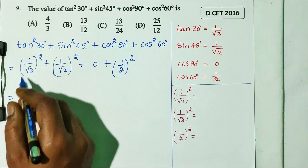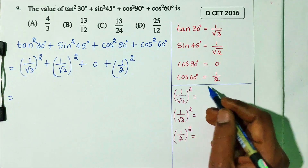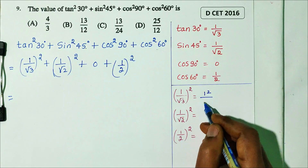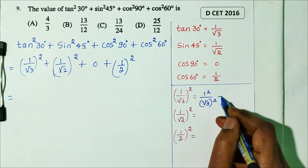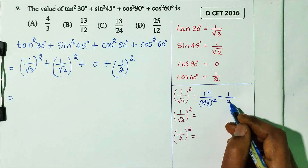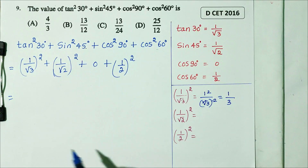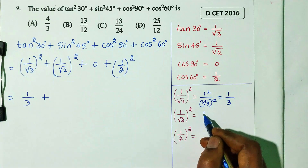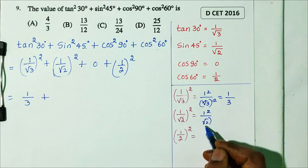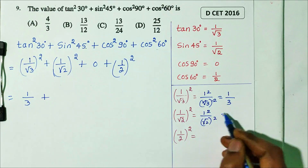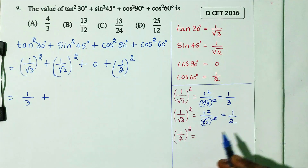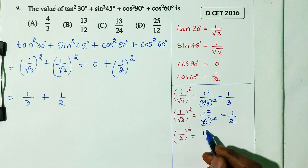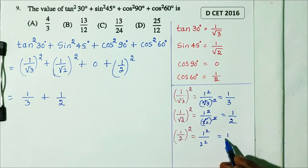Next step: (1/√3)² equals 1/3, because square and square root cancel. (1/√2)² equals 1/2. 0 squared equals 0. (1/2)² equals 1/4. So the expression is 1/3 plus 1/2 plus 0 plus 1/4.